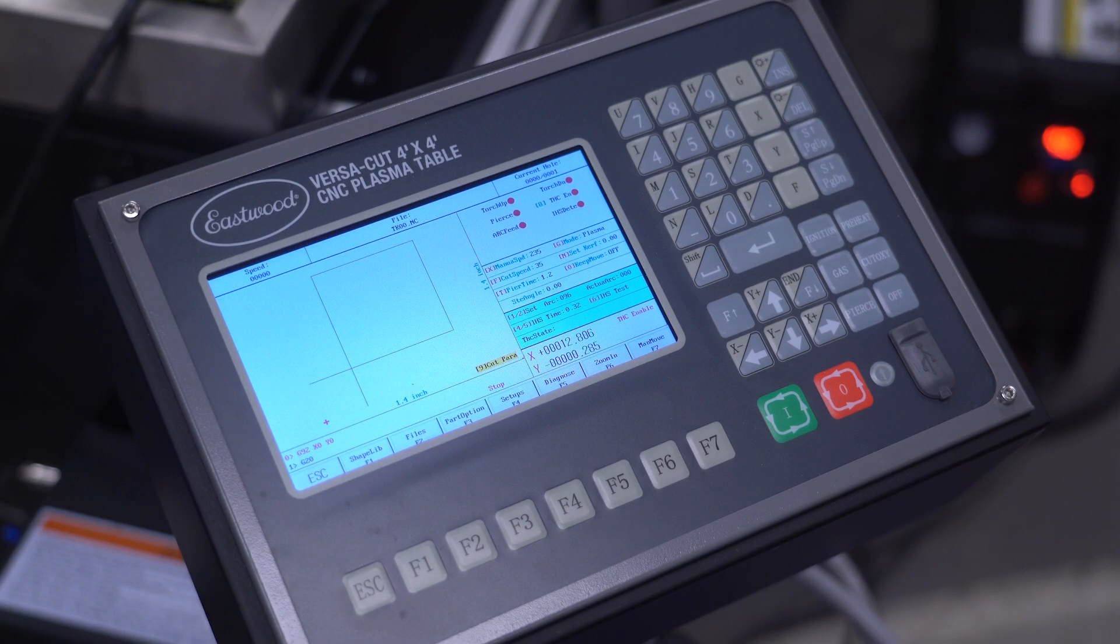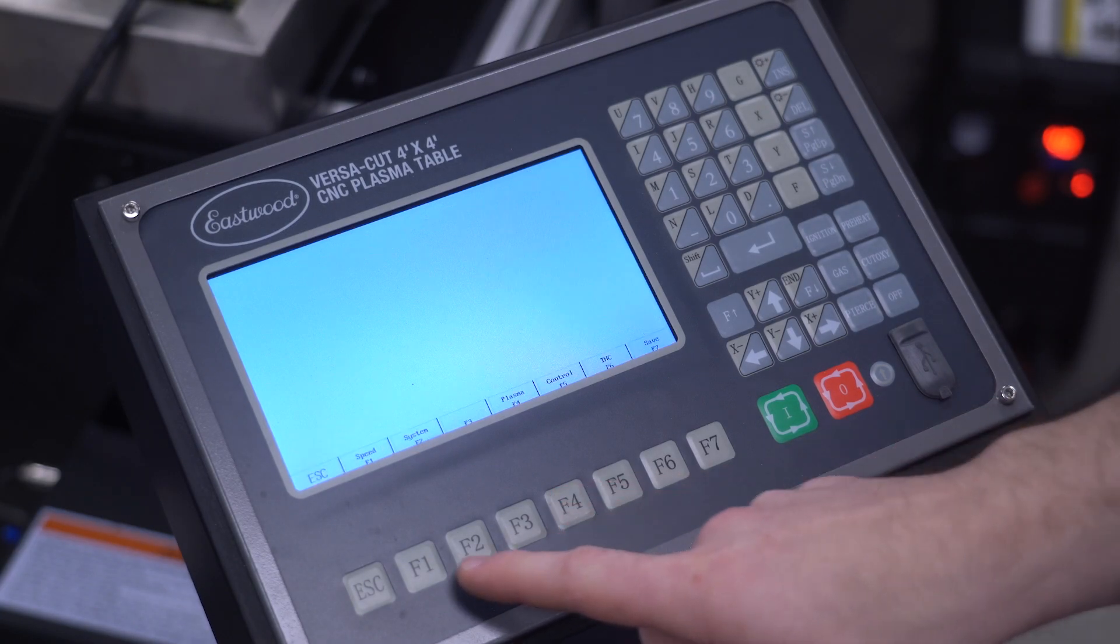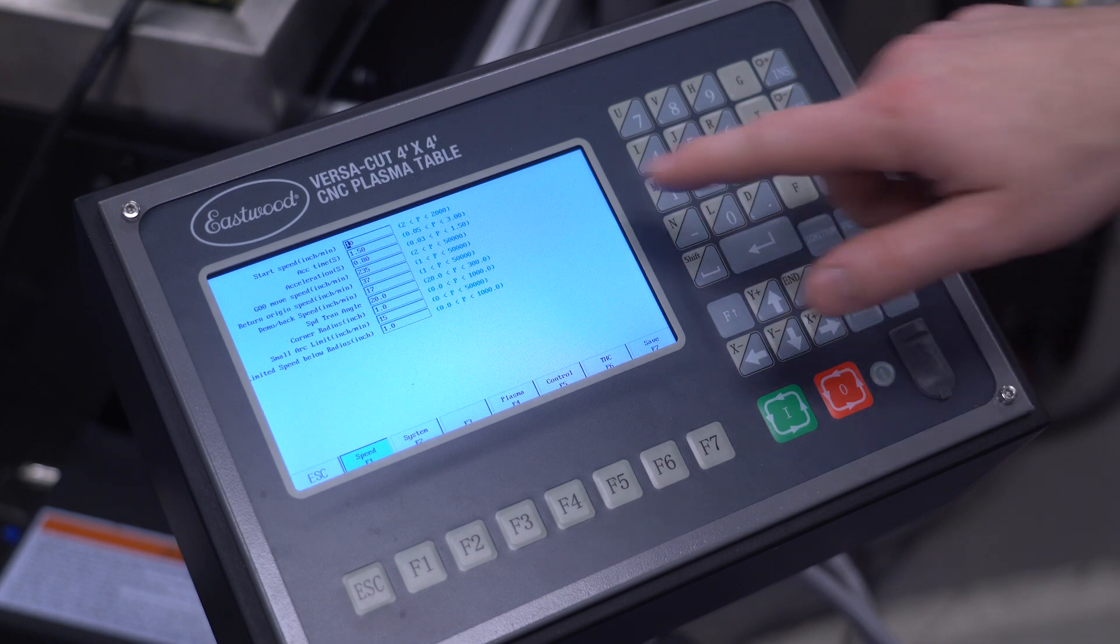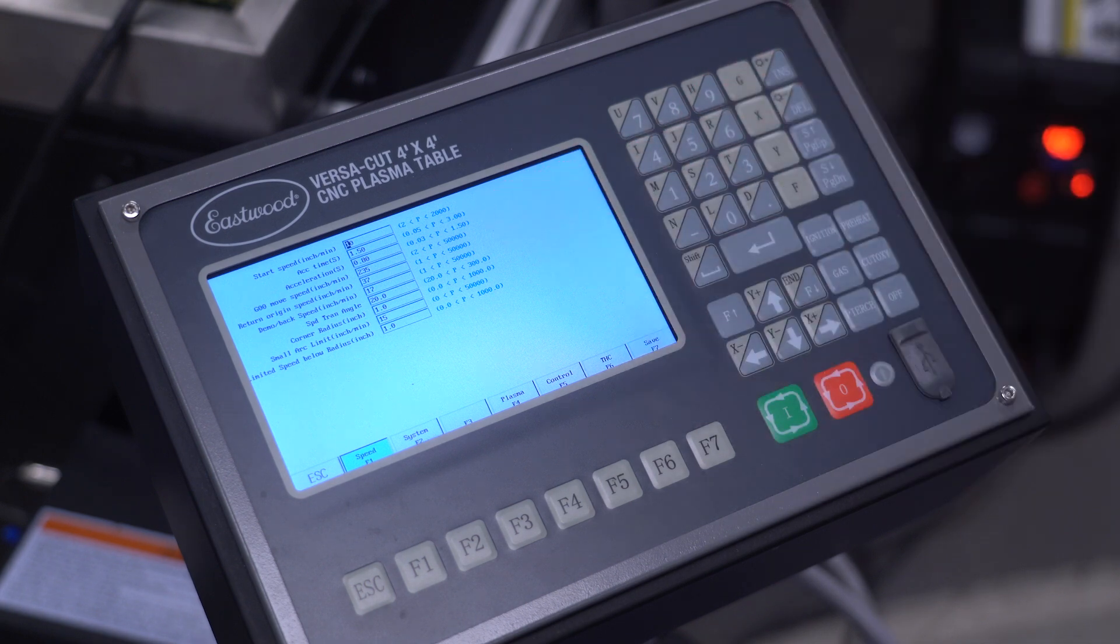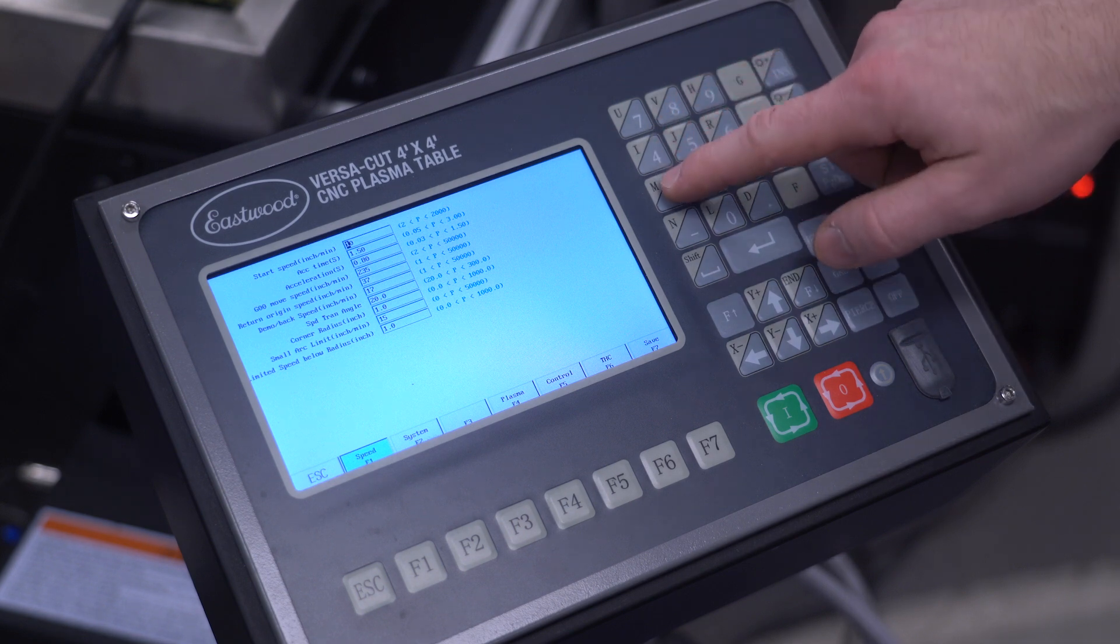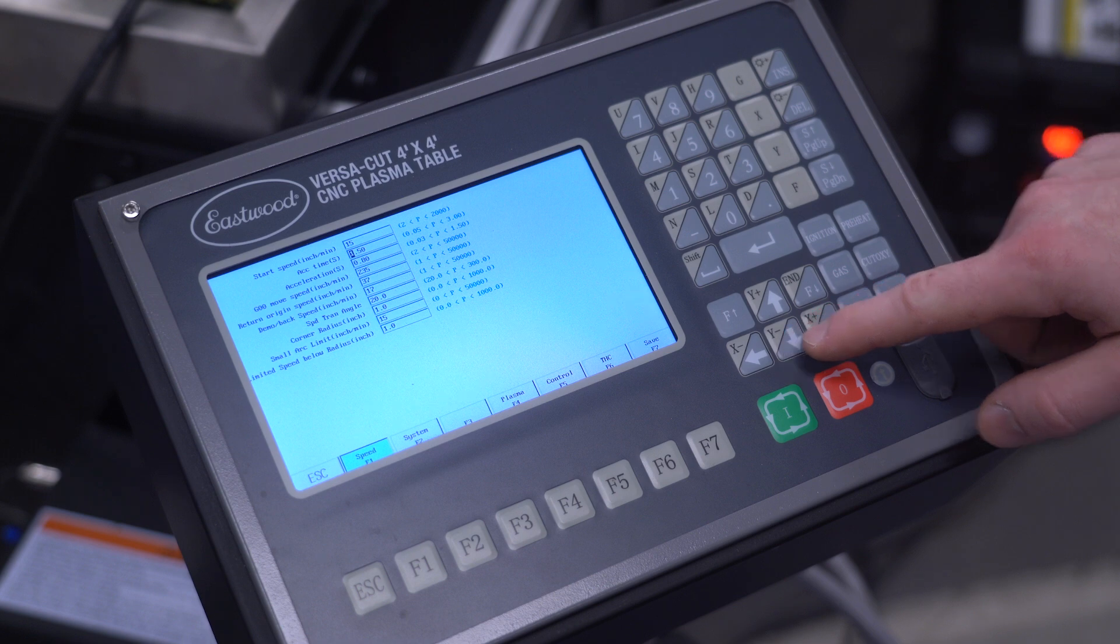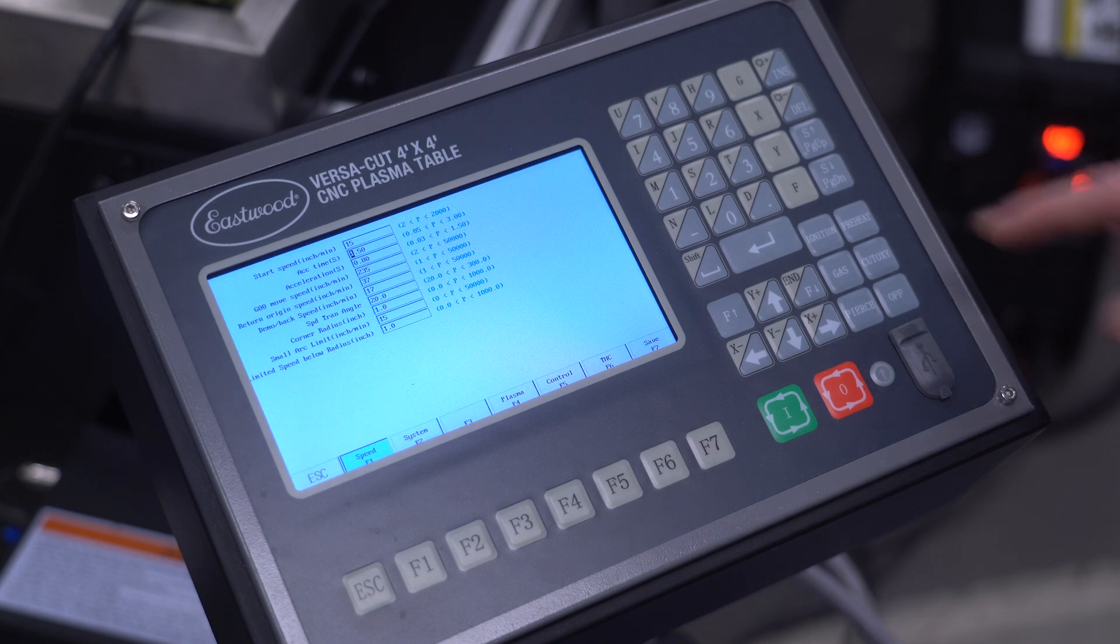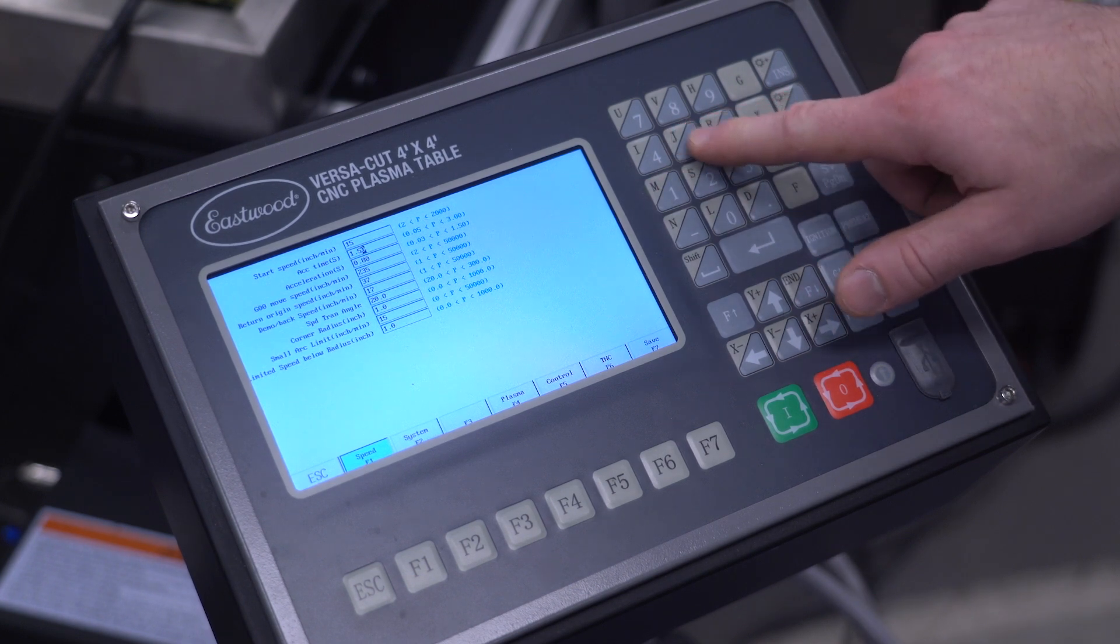Diving in a little deeper in F4 setups, F1 speed, I like bumping these top three acceleration values up so it starts slower and changes direction slower. Start speed is the initial speed of the torch. I'll set that to 15 inches per minute and ACC time is the time over which it transitions from that 15 inches per minute to the full cut speed. ACC time is short for acceleration time. I'll set that to 1.5 seconds.